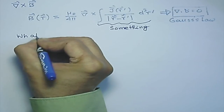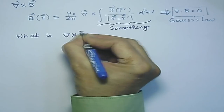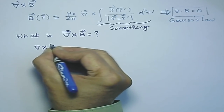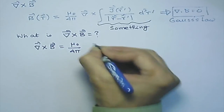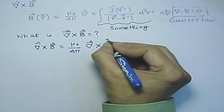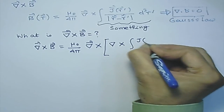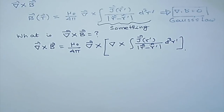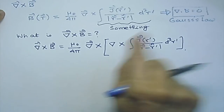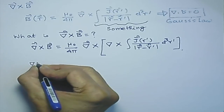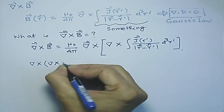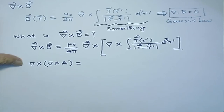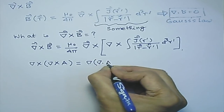del×B = (mu_0/4pi) del×(del× something). Whenever you write del×del×, be very careful — the brackets are extremely important. Notice this is del×del×A, and the formula is: del×del×A = del(del·A) − del²A. This is something we keep using in electromagnetic theory — it is probably a good idea to remember it.